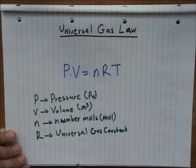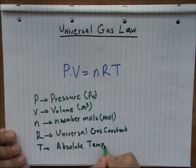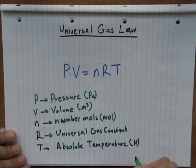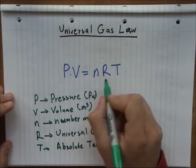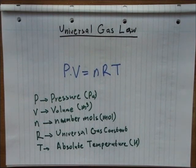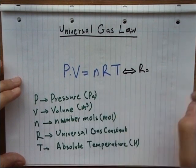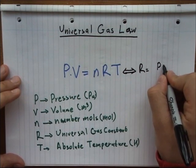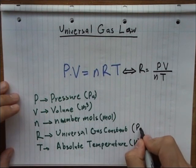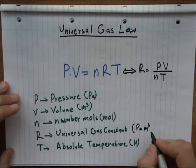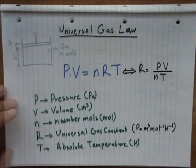T is the absolute temperature measured in Kelvin. We can derive the units of R by rearranging this equation. We can isolate R and find that R equals PV over nT. So the units of R are Pascals times cubic meters times moles to the minus one times Kelvin to the minus one.